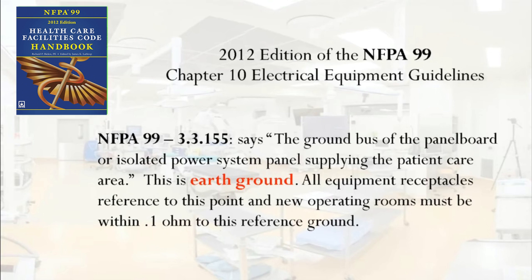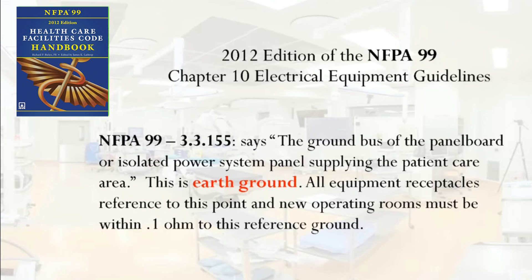NFPA 99 section 3.3.155 says the ground bus of the panel board or isolated power system panel supplying the patient care area — this is earth ground. All equipment receptacles reference to this point, and new operating rooms must be within 0.1 ohm to this reference ground. This means the panel board that has the isolation transformer in it is grounded to earth ground.